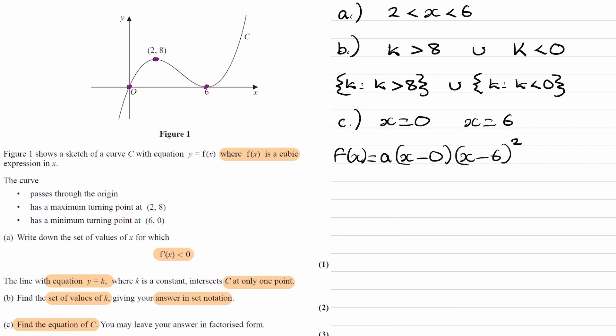So we put in the 2, 8 coordinate. So f of 2 will equal to 8. So this will then become a times 2 times 2 minus 6 squared. That should equal 8. So a times 2 times 4 squared. We get 32a is equal to 8. And a is then equal to a quarter.